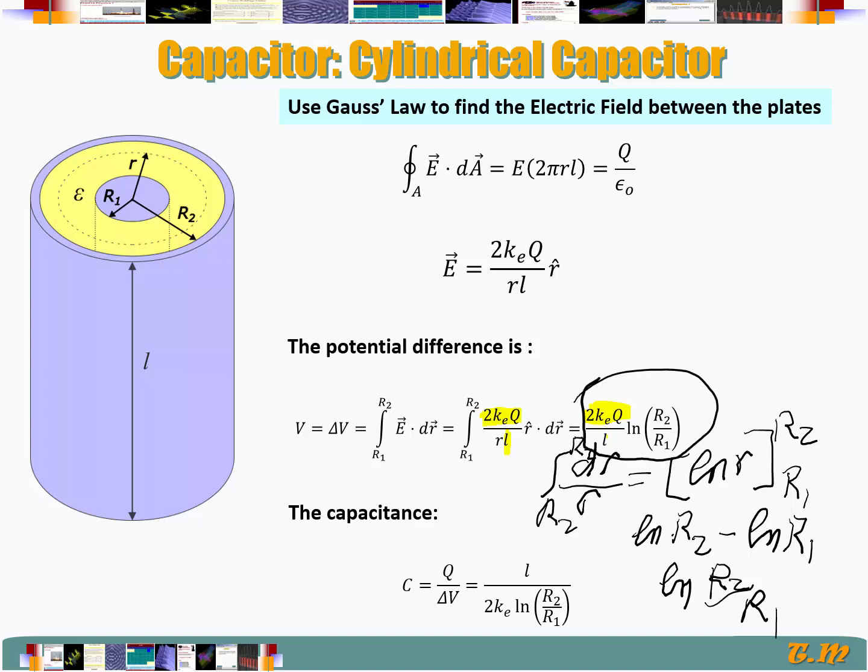So that's the potential difference ΔV. The capacitance is Q over ΔV. So we just divide Q by this expression, and the charge is going to cancel, and we obtain this.